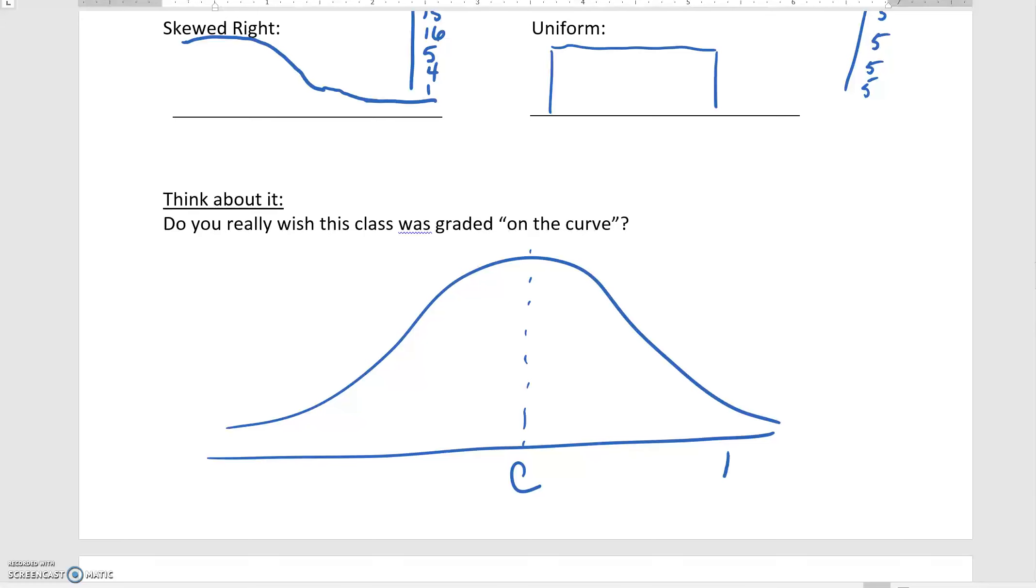And then only a few students would get an A and a few students would get an F, and the exact same number of students would get an A and an F. The exact same number of students would get a B and a D. So in many ways, it's not advantageous for a class to be graded on a true curve, because then you would have to guarantee that so many students get D's or F's.